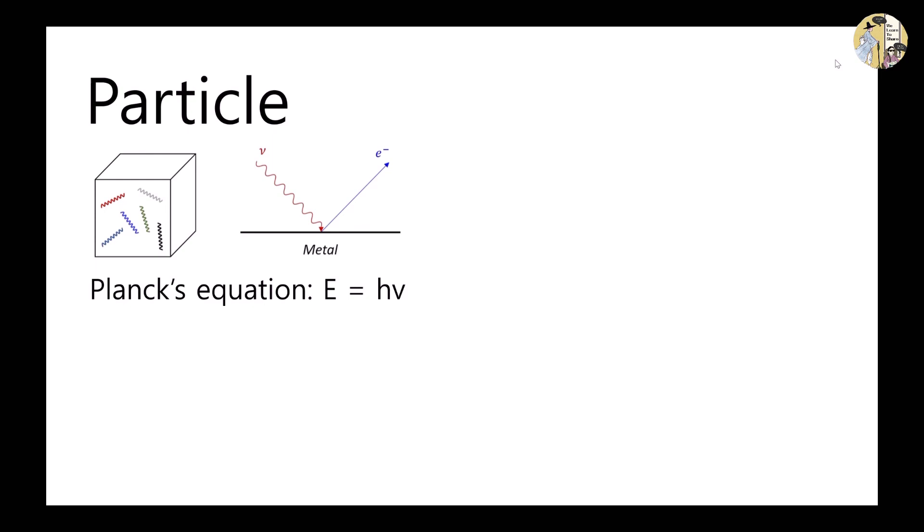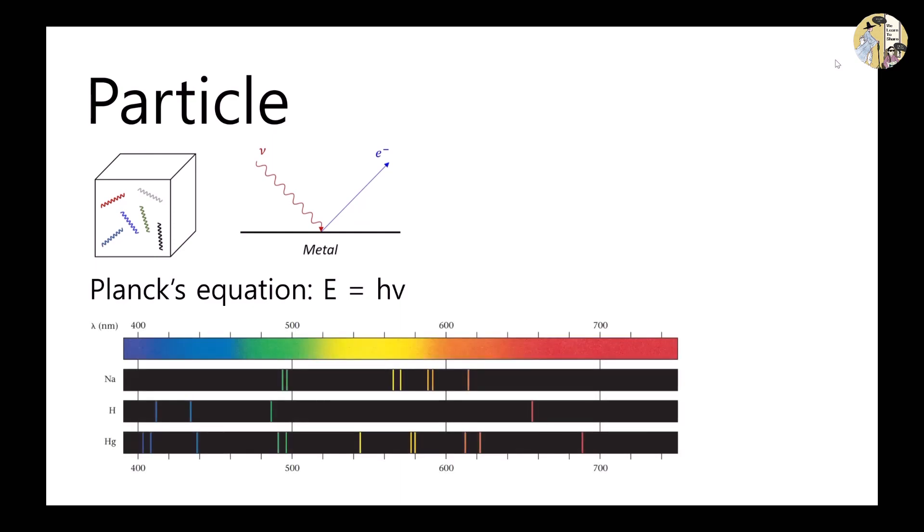The atomic spectrum of gaseous elements are different with the continuous spectrum of the light of the sun, and it consists of discrete lines of specific wavelengths. This implied that the energy levels of an atom should be quantized.